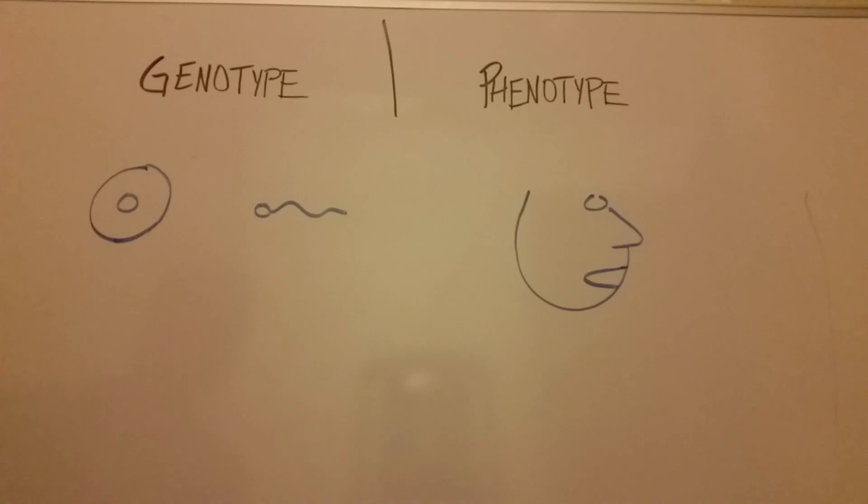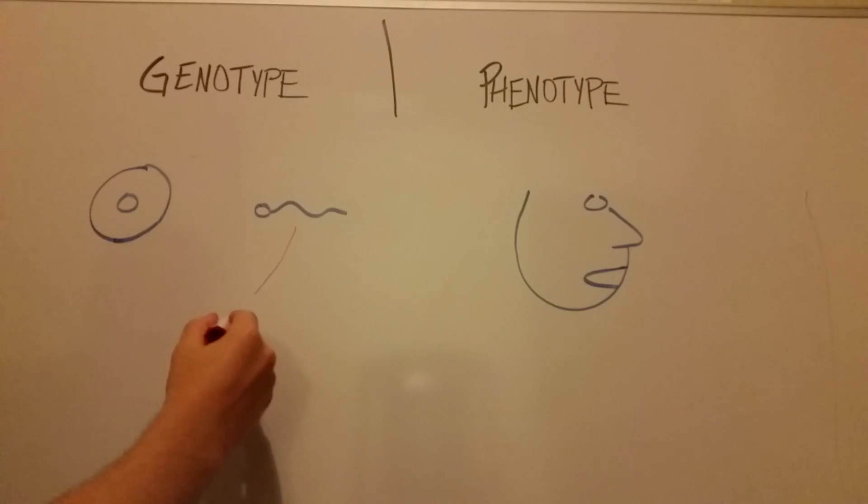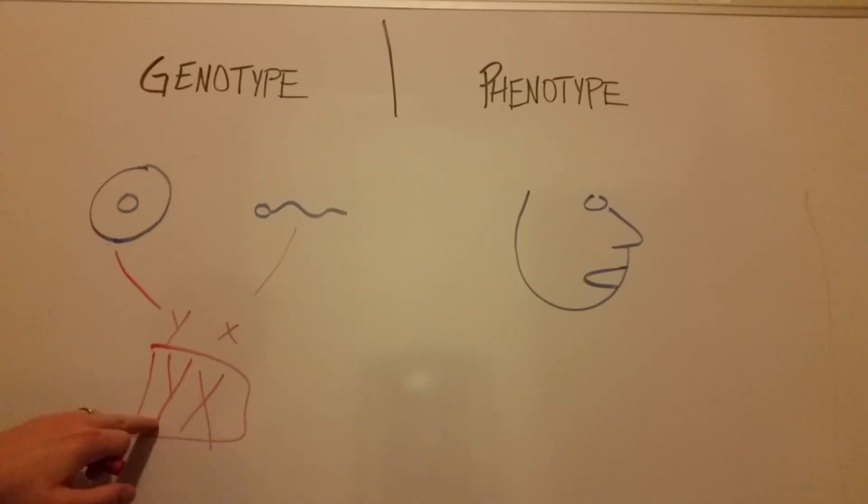So in our genotype, let's say we have two different options. Dad said we should have one set of hair color and mom said we should have another set of hair color. So our genotype is now combined, Y and X. However, for reasons we'll get into in a different video, let's say that Y is a more powerful gene than X and Y means red hair and X means blue hair.